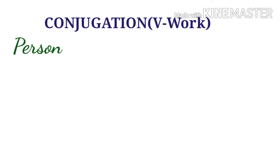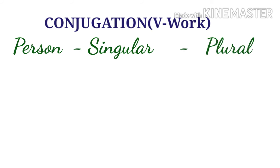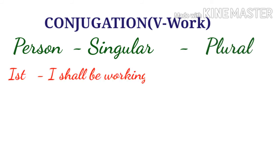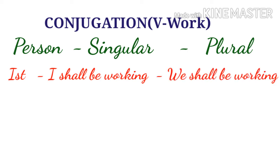Conjugation. Verb: Work. For first person singular: 'I shall be working.' For first person plural: 'We shall be working.'